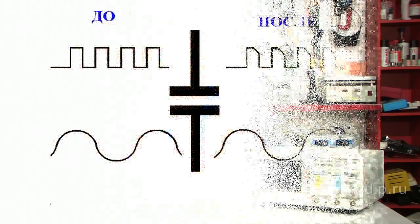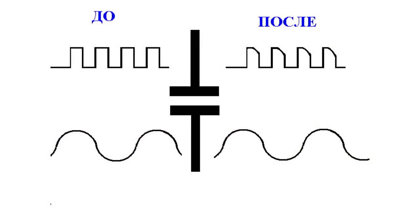For instance, the sinusoidal alternate current passes complicated electric circuits without distortions, whereas any other current is seriously distorted there.